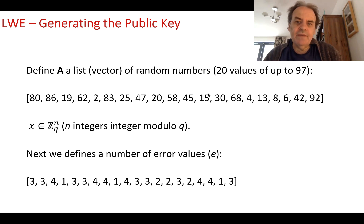Next, we define a vector or list of error values. We generate these randomly and make them very small numbers, in this case up to the value of 4.